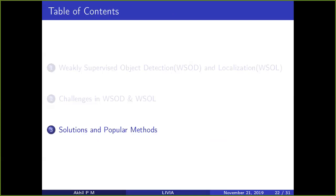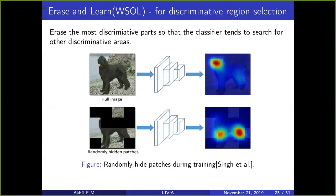Now we go to some popular solutions and methods. Some of them address these challenges and some propose novel approaches so you can efficiently learn a weakly supervised detector. I've tried to cover very popular papers, though it's not a complete list. The first set of weakly supervised localization methods addresses the discriminative area problem.